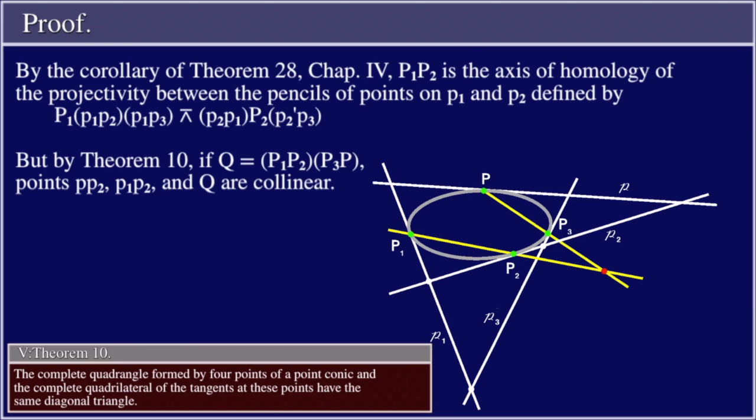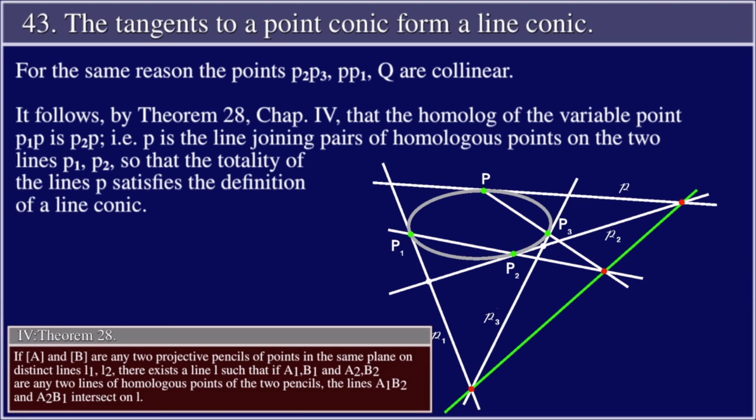For the same reason, the points P₂(P₂P₃, P, P₁P₂) are collinear.